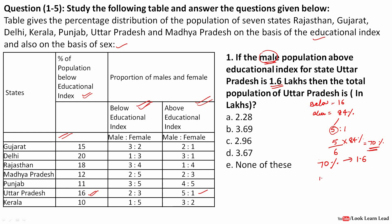This 70 percent equals 1.6 lakhs. So total population = 1.6/70 × 100 = 16/7 ≈ 2.28 lakhs. The answer for this question is 2.28 lakhs. Let's move on to the next question.